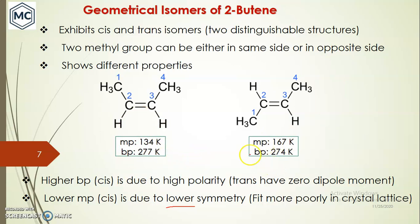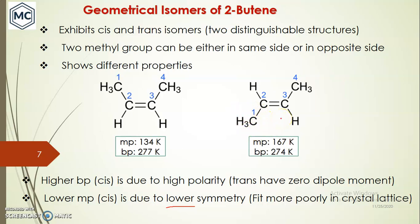What is the reason for the difference in boiling points? It is due to polarity, which is related to dipole moment. In trans, the dipole moments of the two CH3 groups cancel each other out, giving a net zero dipole moment and therefore less polarity. That is why trans is showing a lower boiling point.